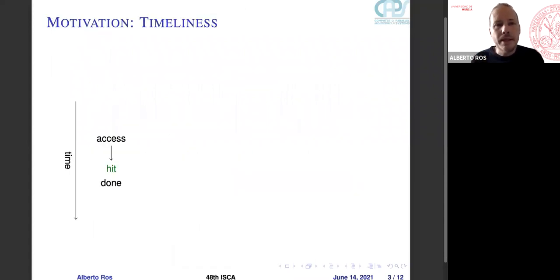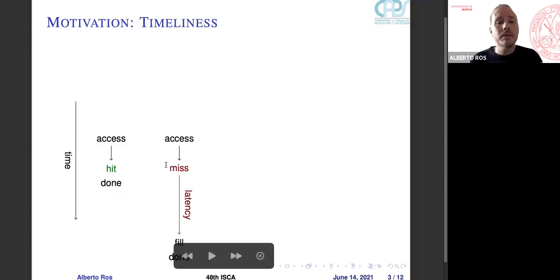Our motivation is timeliness. Ideally, assuming that this is a timeline, we want that every access done by the processor becomes a hit in the L1 instruction cache. But sometimes the instructions will not be there, and we need to find the block in the memory hierarchy. This takes a latency that can be larger or shorter, depending on where the cache block is found in the memory hierarchy. So we can compute this latency and go back in time to know when we should issue this prefetch.